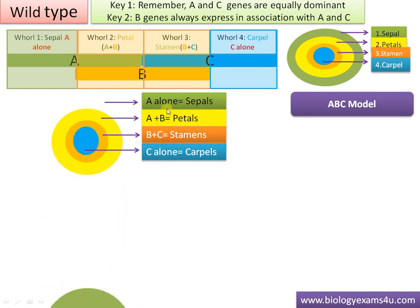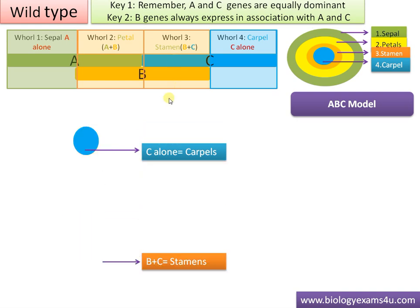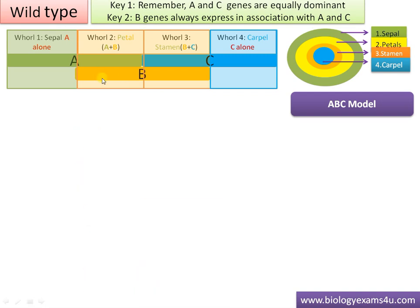The same information is depicted in a concentric ring diagram. A gene is responsible for sepal formation, A plus B expression forms the petal, B plus C forms the stamen, and C alone forms the carpel — the female reproductive part of the flower. This data was deduced by creating mutations in each class of these genes.